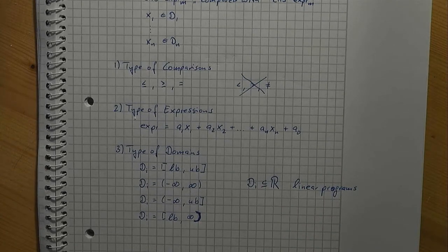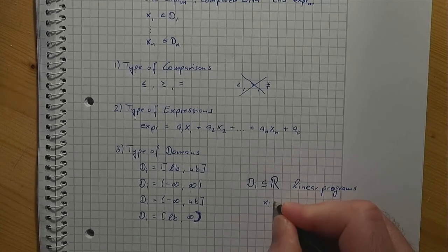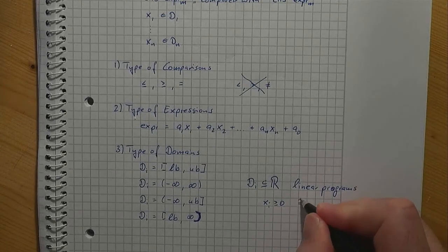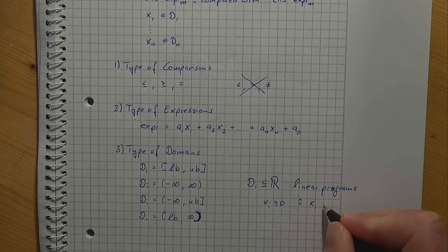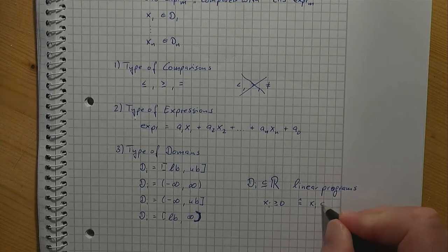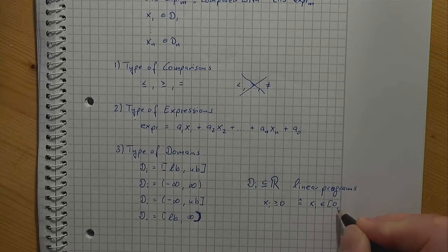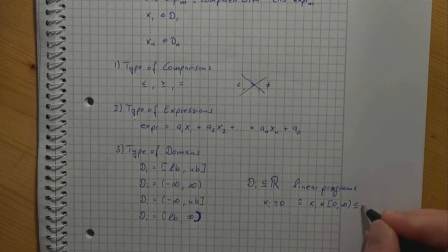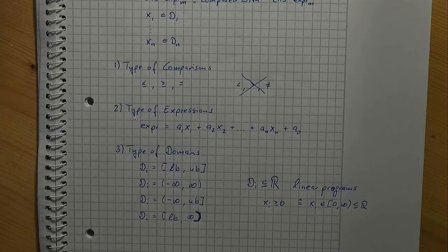In previous videos, we have used xi greater than or equal to zero as a shorthand notation for xi is in the interval from zero to plus infinity, which is a subset of the real numbers.